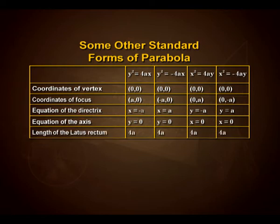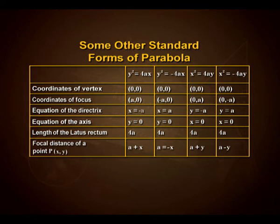The length of the latus rectum for y² = 4ax is 4a. Similarly, the latus rectum length for y² = −4ax is 4a, and it remains 4a for x² = 4ay and x² = −4ay as well. The focal distance of a point P(x, y): for y² = 4ax it is a+x; for y² = −4ax it is a−x; for x² = 4ay it is a+y; and for x² = −4ay it is a−y.